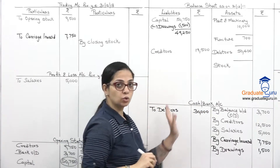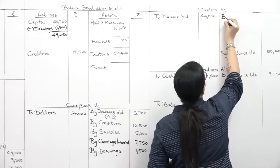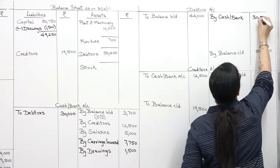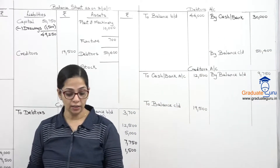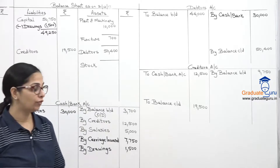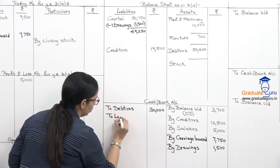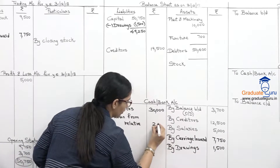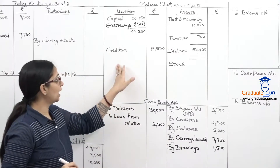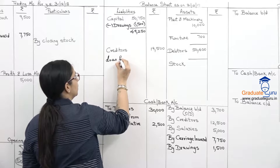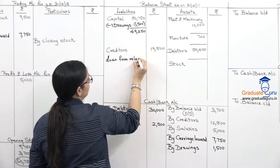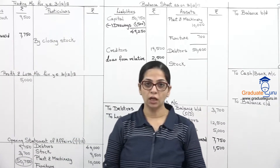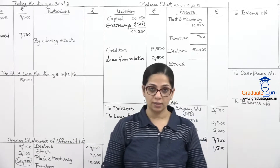Loan taken from relative of 2,500 — debit side of cash bank, second effect on liability side as loan from relative 2,500. Cash bank transactions are now complete with double effects given for all entries.